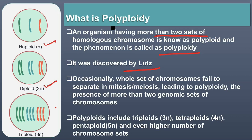In this diagram you can see the haploid number and the diploid condition. When an extra set of chromosomes is present, this is triploid, and beyond that is polyploid. This represents a polyploidy condition.